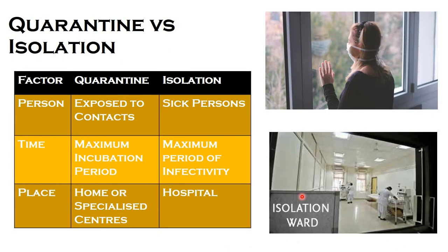Now, what is quarantine and isolation? Quarantine is an old procedure followed in ships during plague times — persons from a ship had to wait in port for 40 days to prove they were free of any disease before being allowed into the mainland. Quarantine is for those exposed to or in contact with COVID-19 persons, while isolation is for persons who are sick or showing symptoms of the disease.